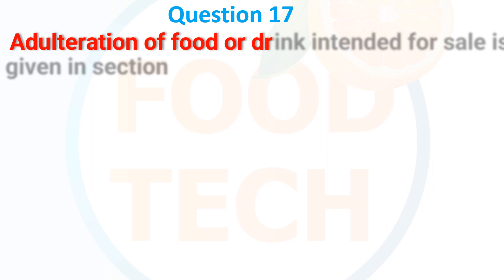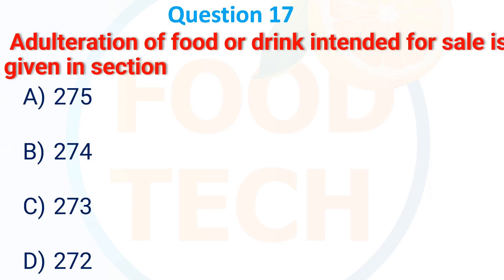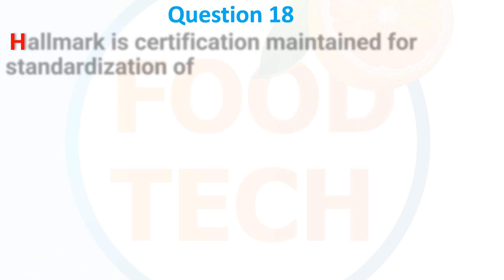Administration of food and drink with intent for sale is given in which section of IPC? A. 275, B. 274, C. 273, D. 272. The answer is 272.